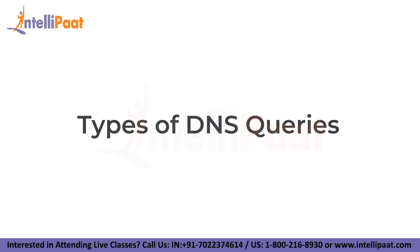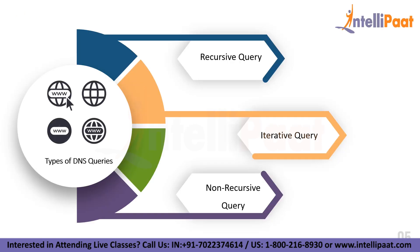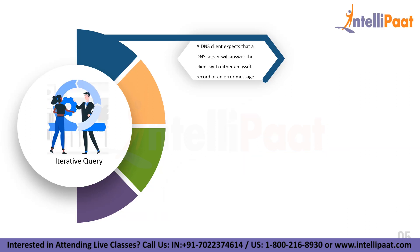Now let's learn about all the types of DNS queries. There are three types: recursive query, iterative query, and non-recursive query. In an iterative query, if the queried DNS server doesn't have a match for the query name, it will return a reference to a DNS server one level lower in the domain namespace. It will then make an inquiry to that referenced server. This process continues until either a result or an error occurs.